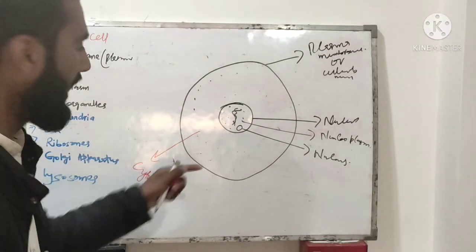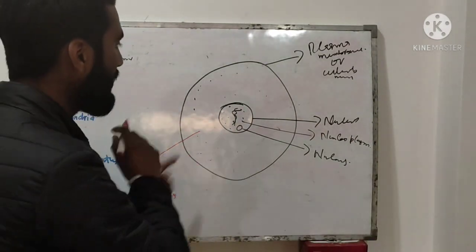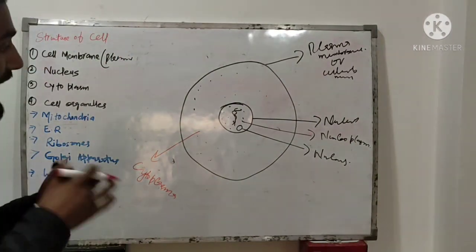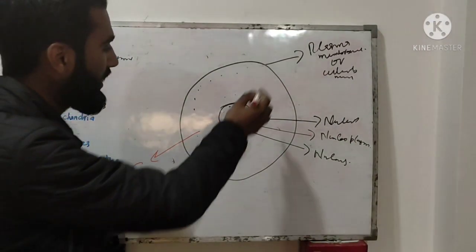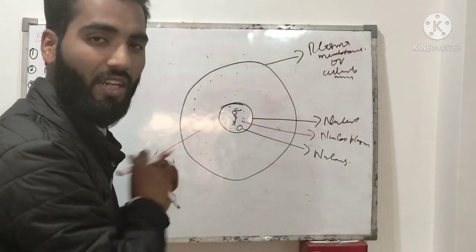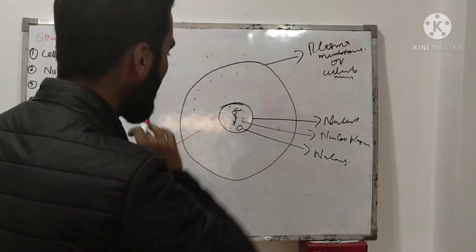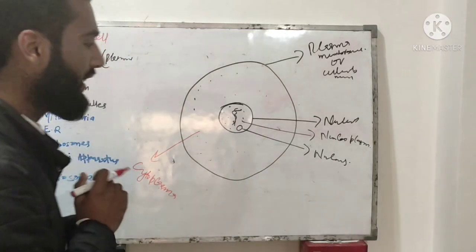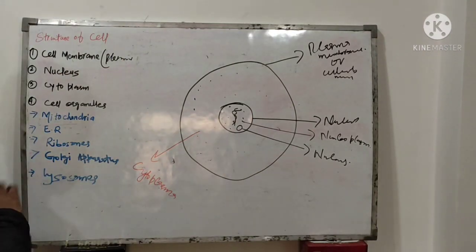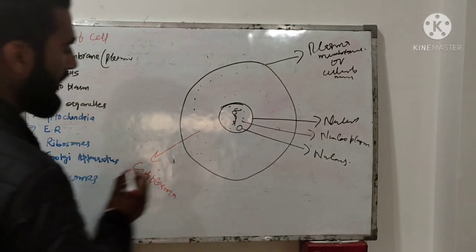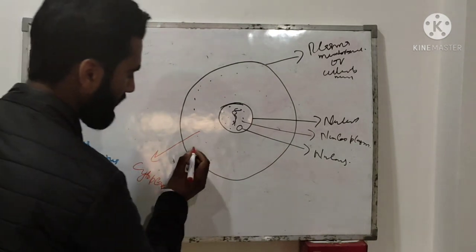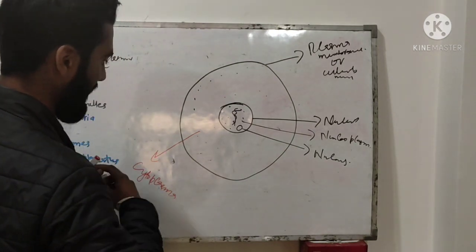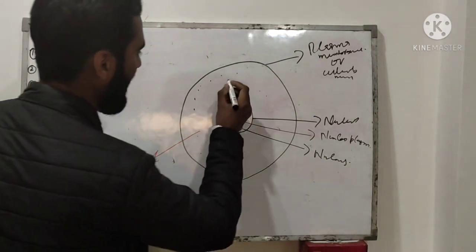The cytoplasm is present between the nucleus and the plasma membrane. Inside the cytoplasm, cell organelles are floating — they are embedded in the cytoplasm. Now we will look at the organelles one by one.